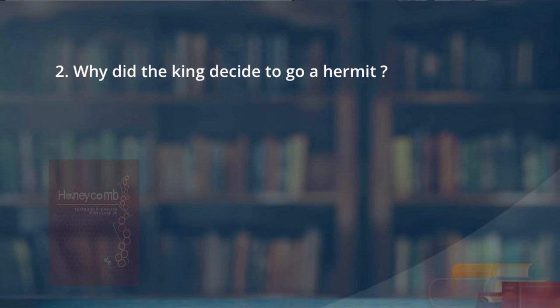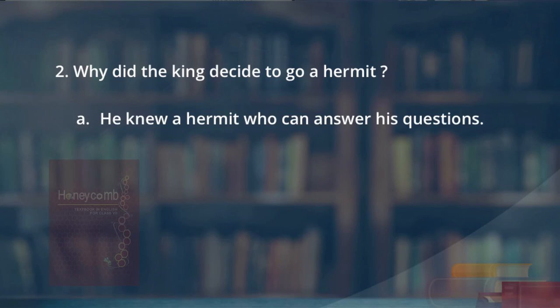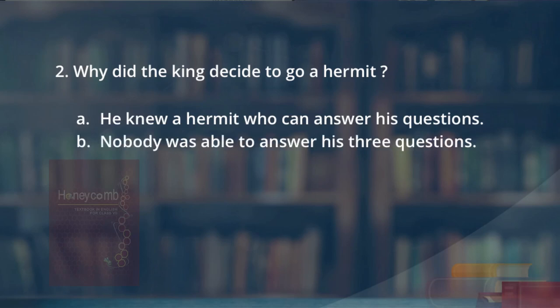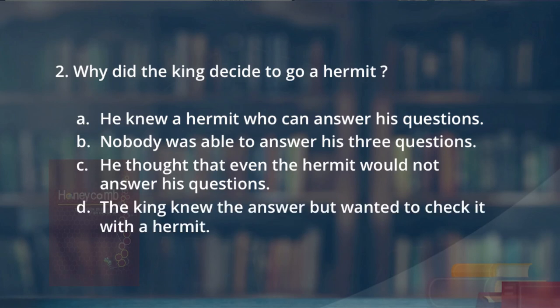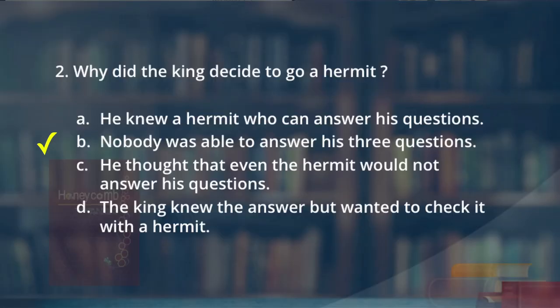Second question: why did the king decide to go to a hermit? The options are: he knew a hermit can answer his questions; nobody was able to answer his three questions; he thought even the hermit would not answer his questions; or the king knew the answer but wanted to check it with the hermit. The correct answer is option B — nobody was able to answer his three questions, so he went to the hermit.